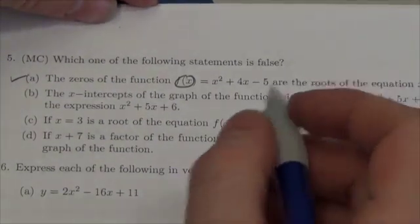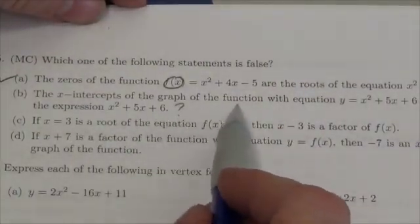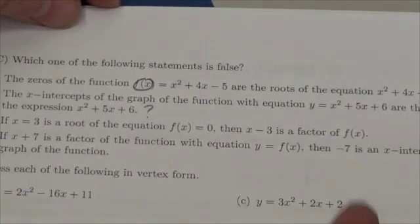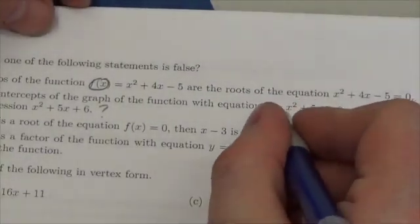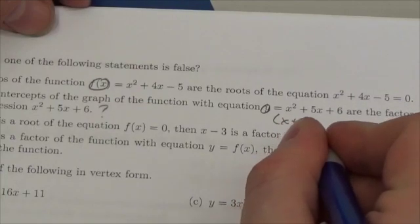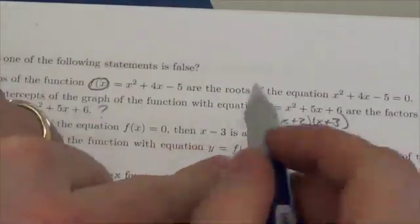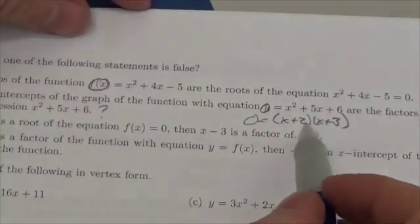It says the x-intercepts of the graph of the function. The x-intercepts occur where you would make this equal to 0. You would factor this to get x plus 2 times x plus 3. But here's the issue - I get that factor, so these are the factors x plus 2 and x plus 3.